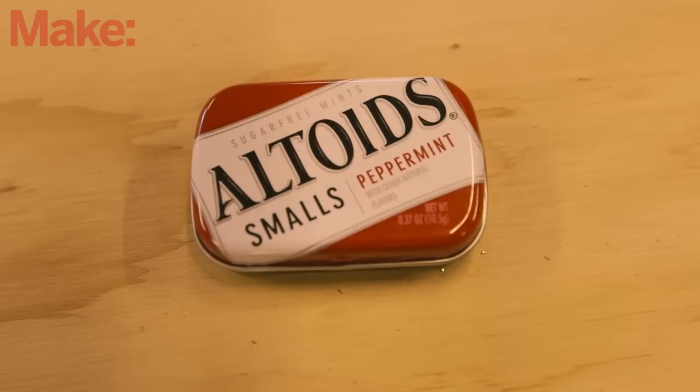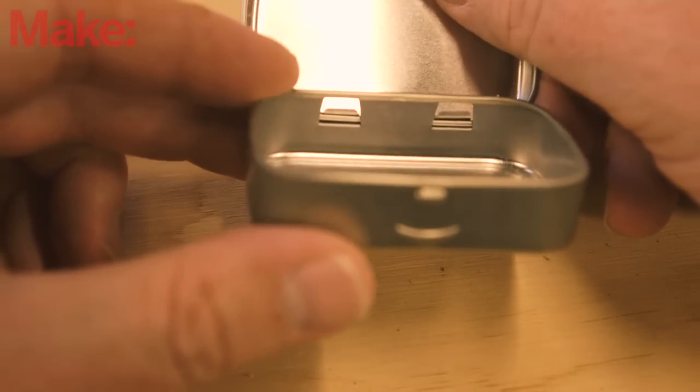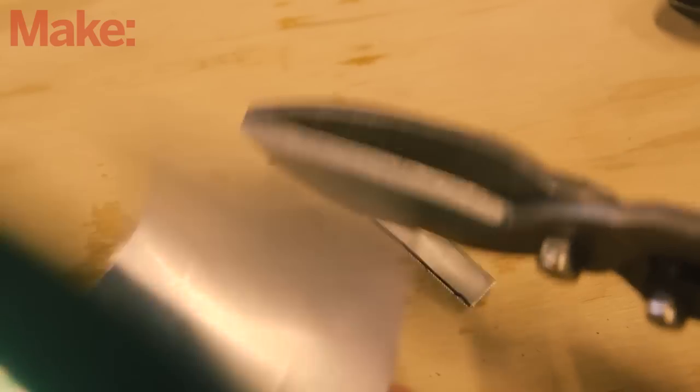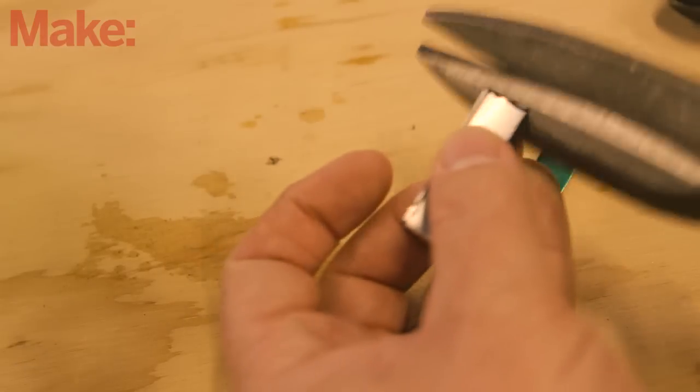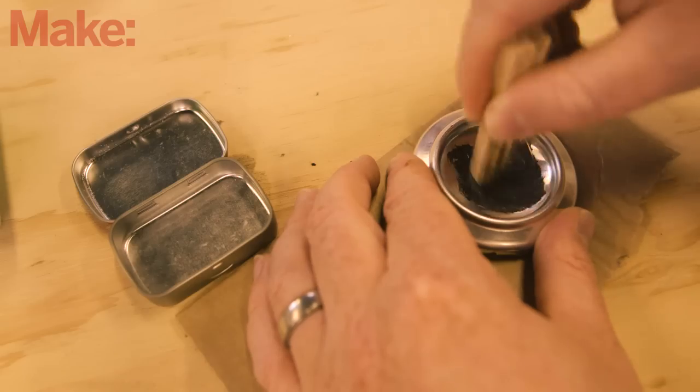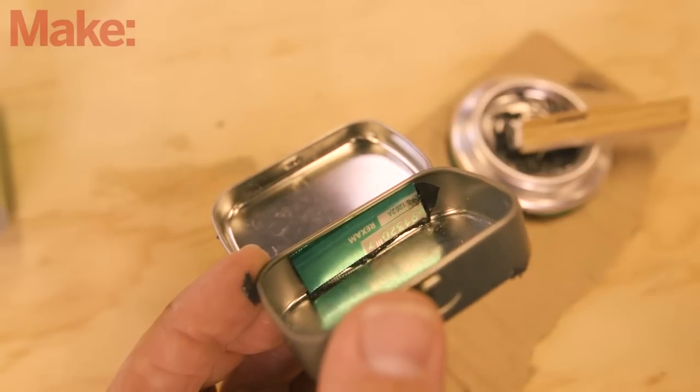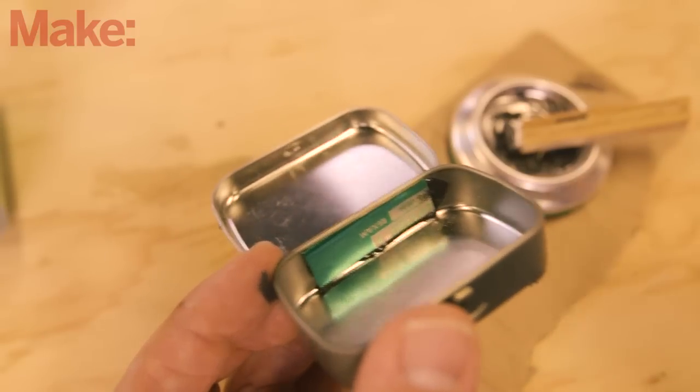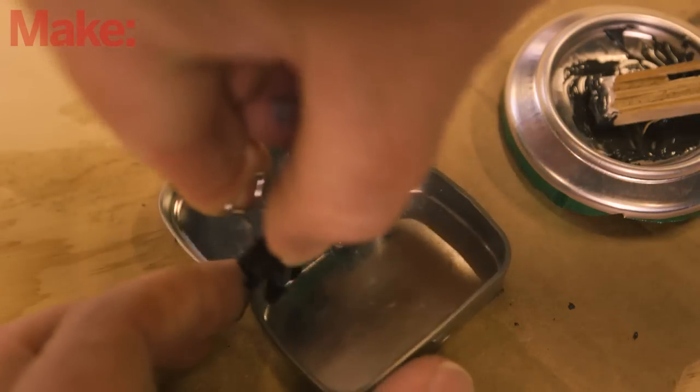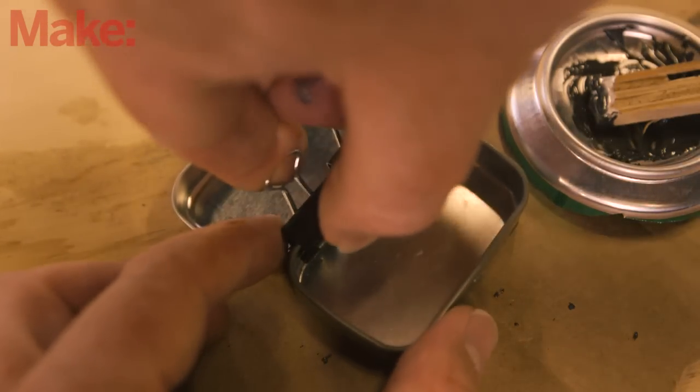The small mint tin is what we'll use to hold our fuel, but first we need to seal the hinge holes. Cut a 1 by 4 centimeter piece of aluminum from a soda can. Use JB weld to attach the aluminum strip to the inside of the small tin so the hinge holes are covered. Use binder clips to hold the pieces together while the JB weld cures.